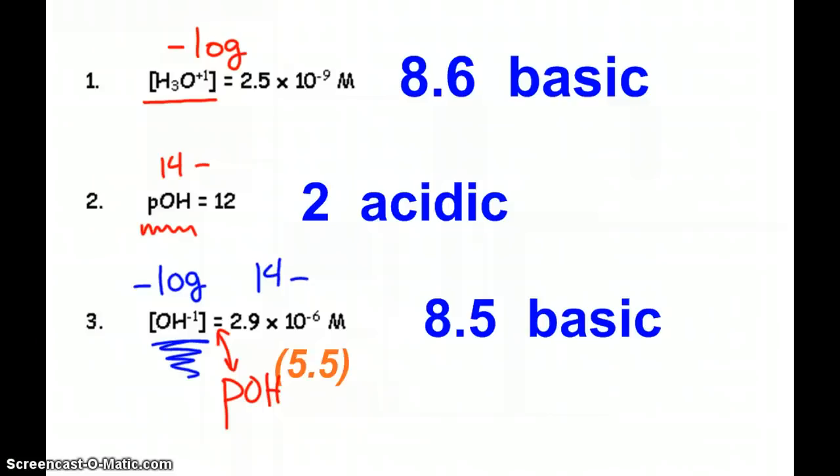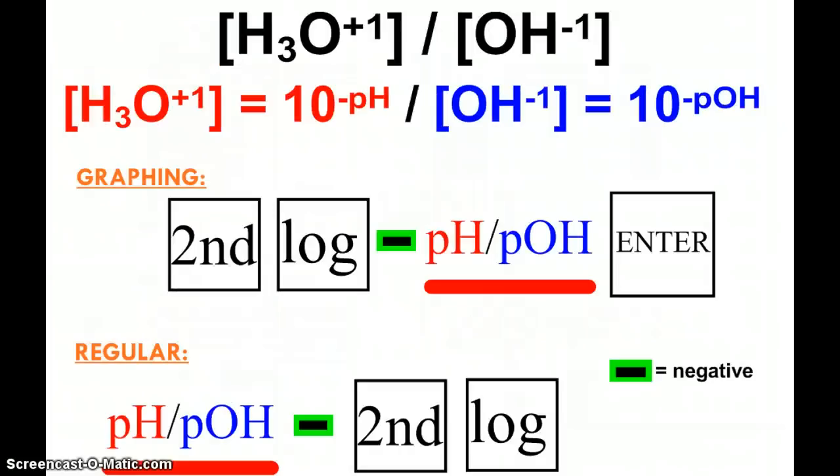Now the other thing we can do is do the reverse. If I give you the pH or pOH, you can tell me what the concentrations are. If the solution concentration is 10 to the negative 5 for hydronium, I'm sorry, if the solution pH is 5, the concentration is 10 to the minus 5. Well, as it says there, what if the pH is 8.44? Well, the hydronium concentration, we have to use the reverse log.